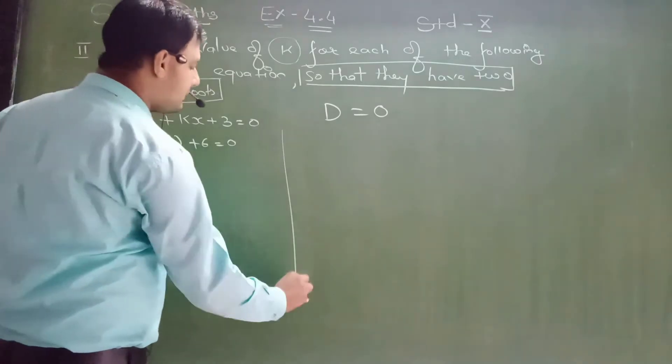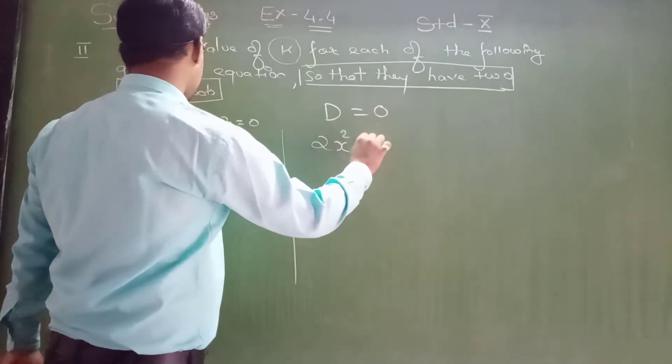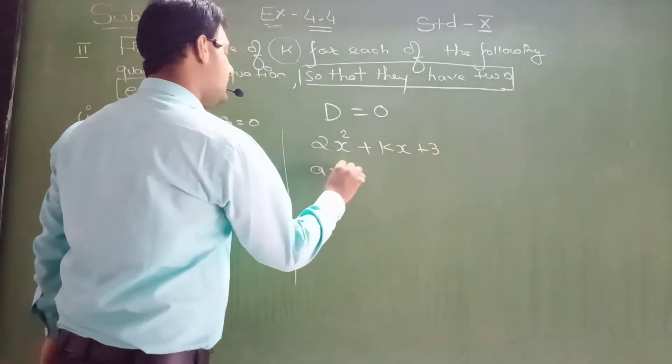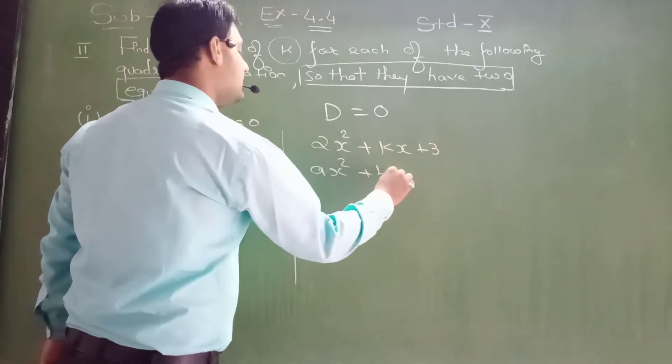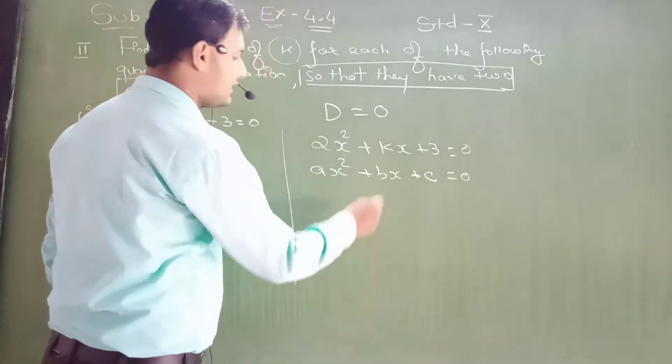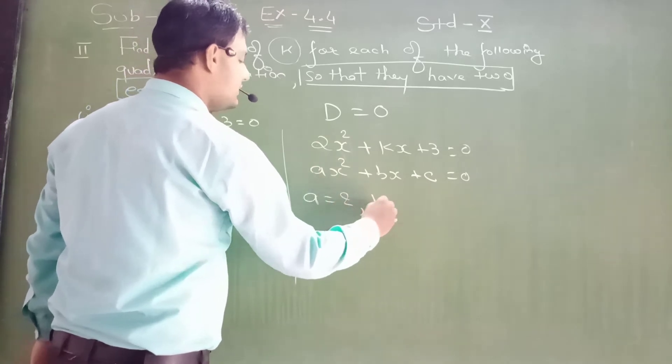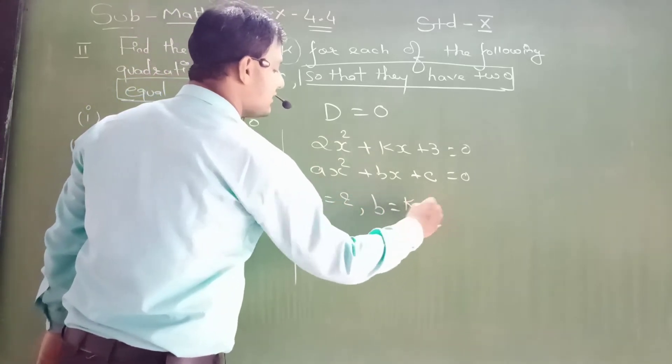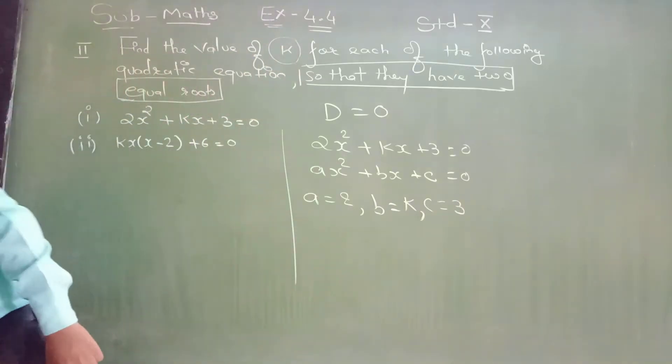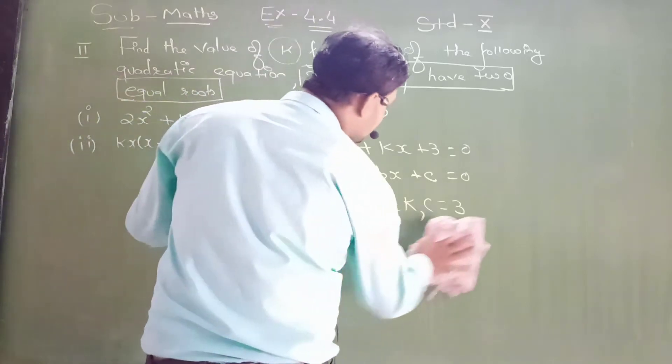First question, dear students. You have to compare this equation 2x² + kx + 3 to ax² + bx + c. So a is 2, b is k, and c is 3. What is a? 2. B, that is k. And c, that is 3.